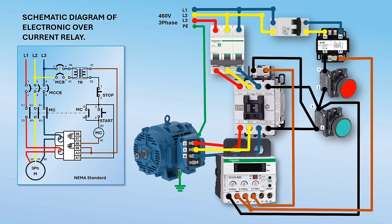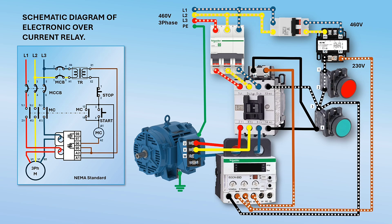Pay attention to the diagram as it changes status during the operation sequence. With 460 volts three-phase present on the upstream of the MCCB and MCB: switching on the MCCB makes voltage present on the contactor input. Switching on the MCB energizes the control transformer, stepping down the voltage from 460 to 230 volts, which is supplied to the control circuits. The closed loop of transformer output, NC of stop button, and EOCR terminals A1 and A2 energizes the protection relay.